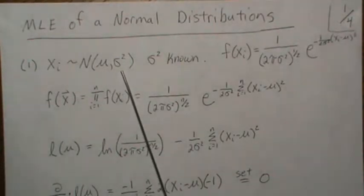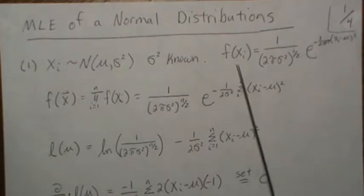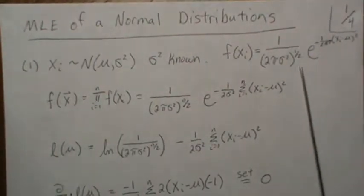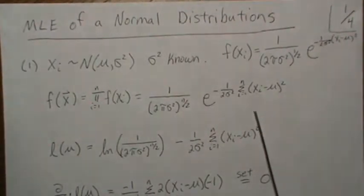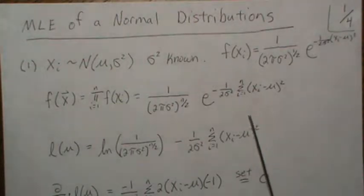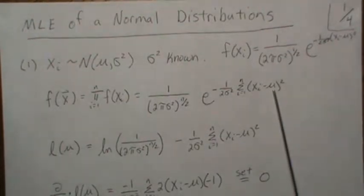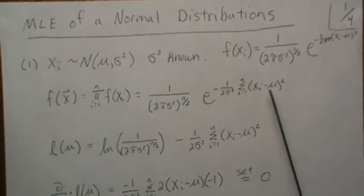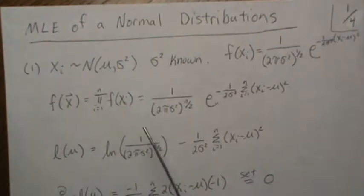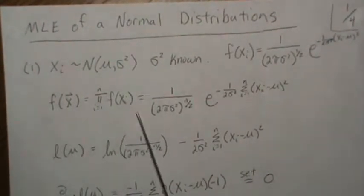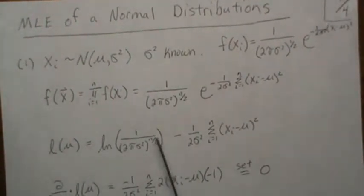In the first case, we let X be normal with mean μ and variance σ², and we assume that we know the variance. The density for one observation is given, and the joint distribution is a product of the marginals. The likelihood is essentially the same expression, but we think of the parameters μ and σ² as varying while X is fixed — the reverse of the joint density perspective.